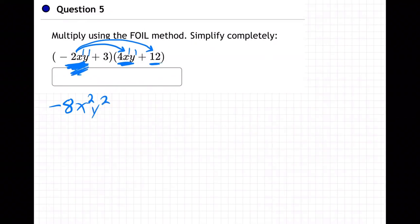And then next, this guy is going to go to this guy. That'll be minus 24, 2 times 12, 24xy. So, minus 2xy times plus 12 is minus 24xy.